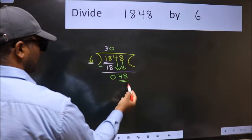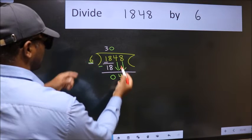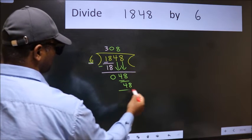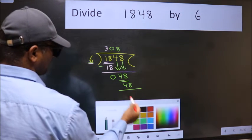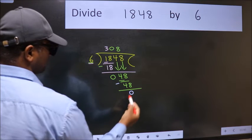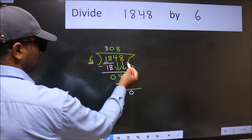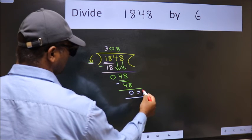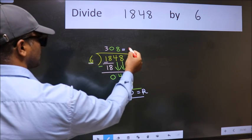So 48. When do we get 48 in 6 table? 6 eights 48. Now we subtract. We get 0. No more numbers to bring it down, so we stop here. This is our remainder and this is our quotient.